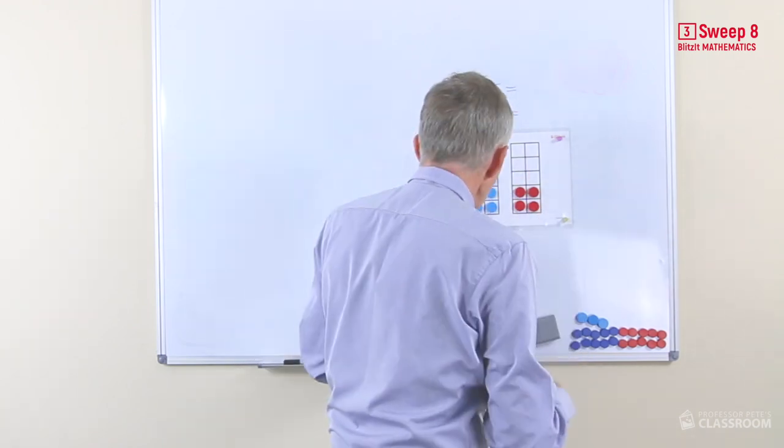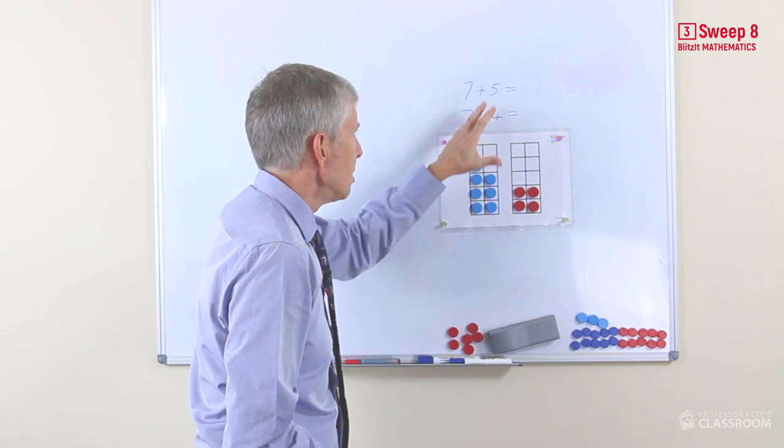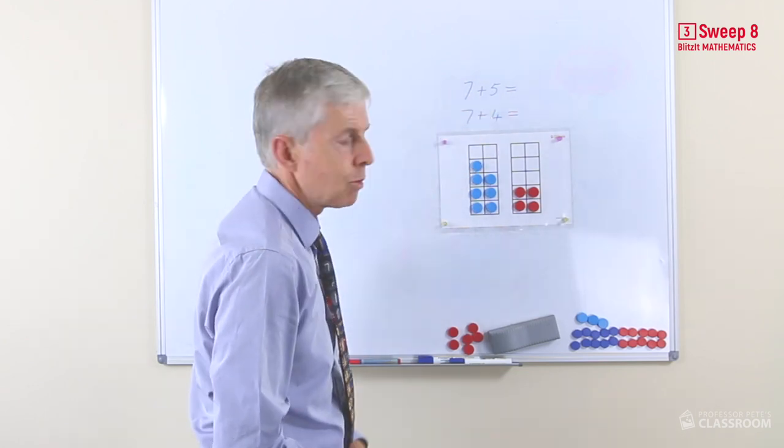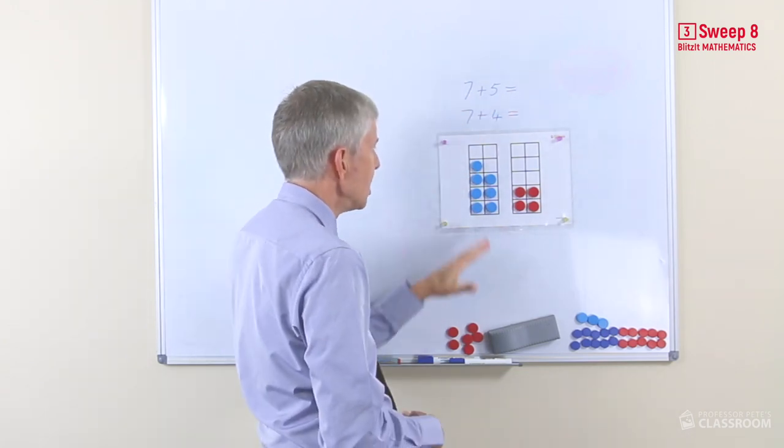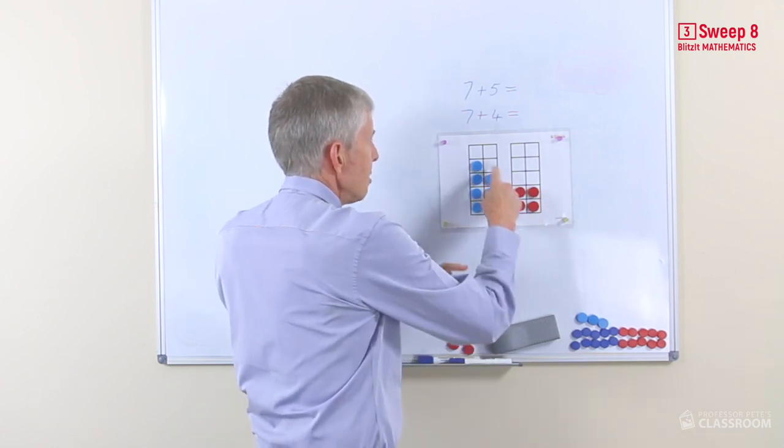If we were adding seven and four or four and seven, of course in the turnarounds, we're still going to start with the seven as the larger number first. Seven plus four, this time we've got to move three, so we would move these three counters up there.